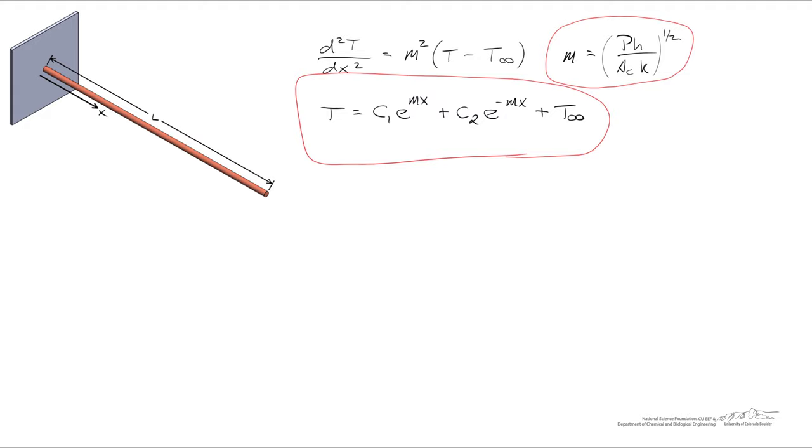One thing to think about in terms of units: the dimensions for this fin parameter m is equal to 1 over meters. And that's important because each of the exponentials we need to have a unitless quantity when we exponentiate something.